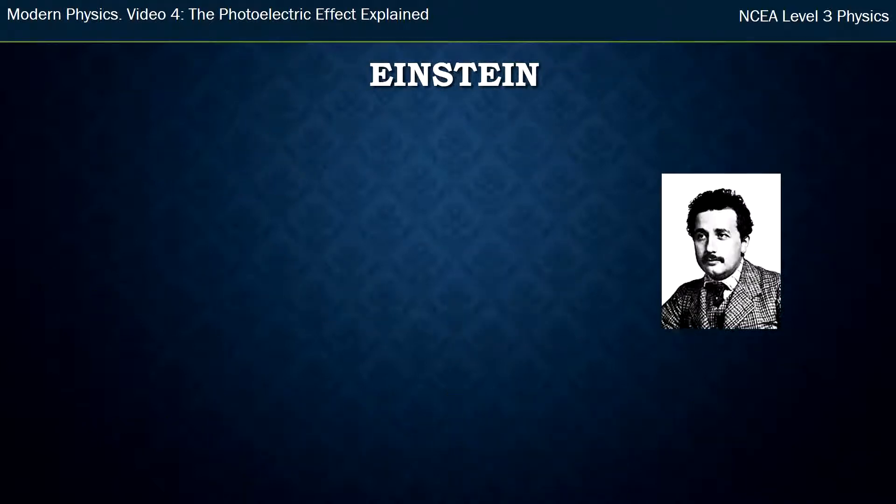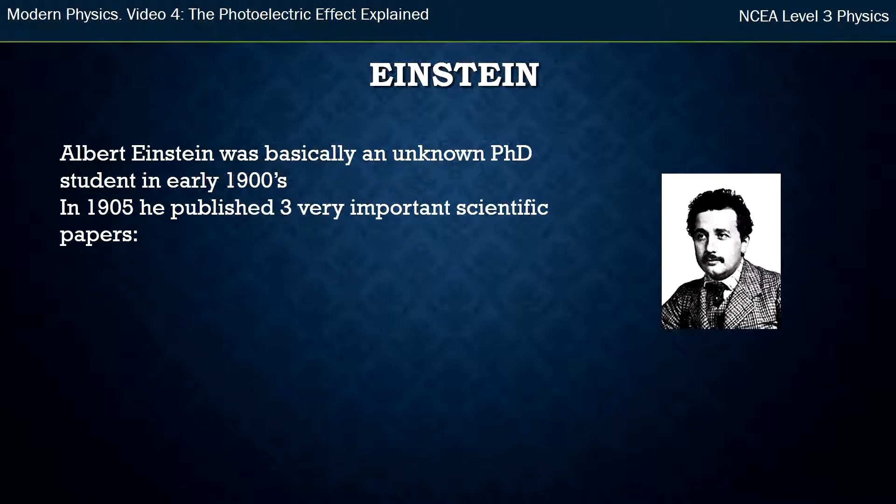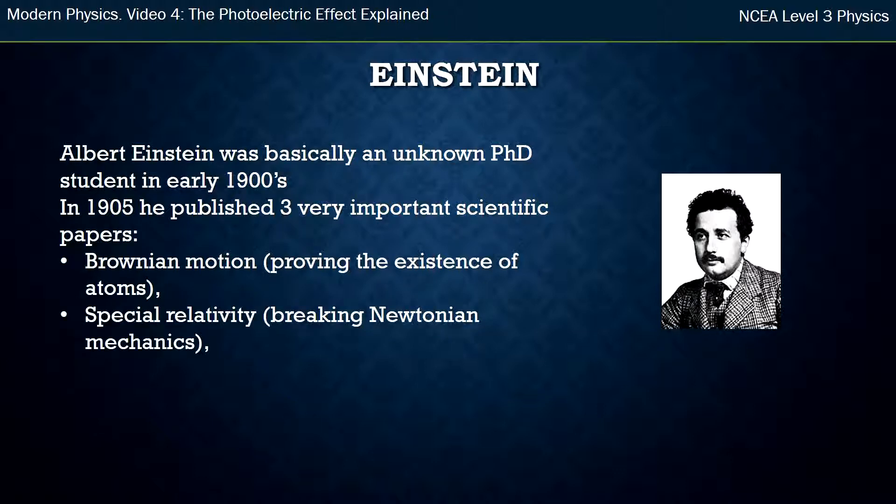Into this comes young Albert Einstein, which I'm sure you've all heard of. So in the early 1900s he was basically an unknown PhD student. He published in 1905 three very important scientific papers which thrust him into scientific stardom. The three papers were, the first one was on Brownian motion which was proving the existence effectively of atoms. He then had a paper on special relativity which effectively broke down Newtonian mechanics. And the last paper was on explaining the photoelectric effect.